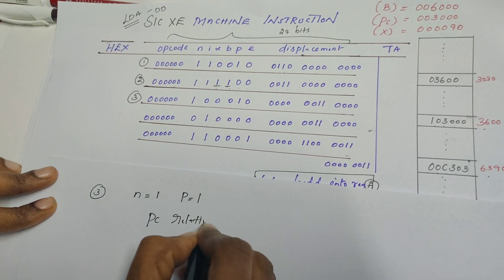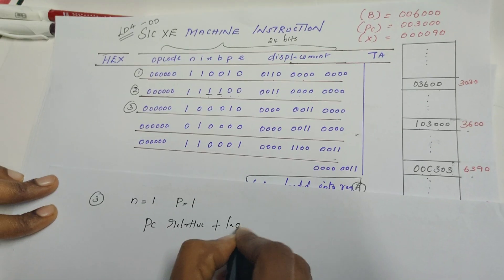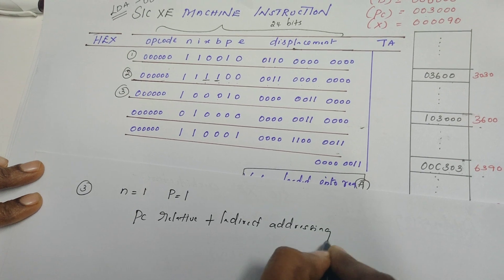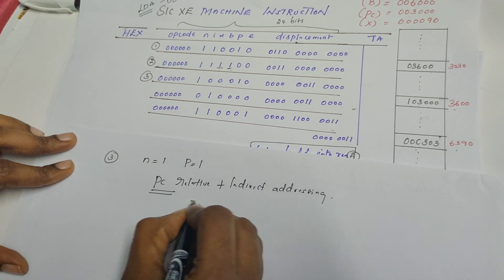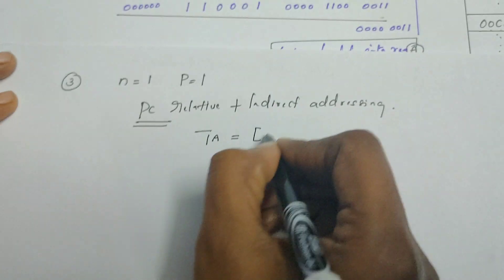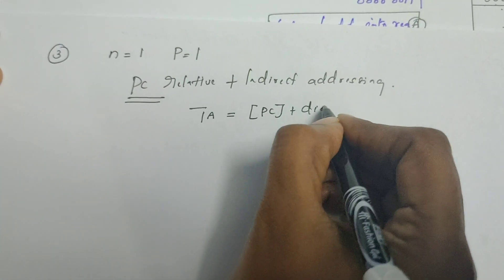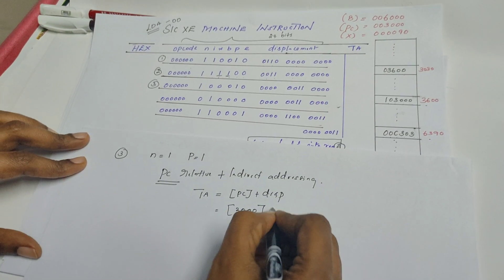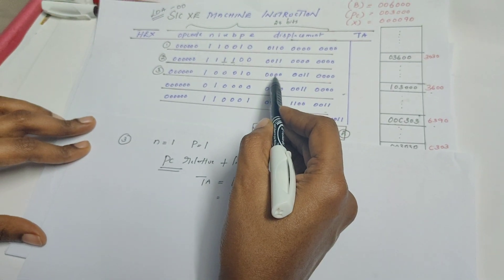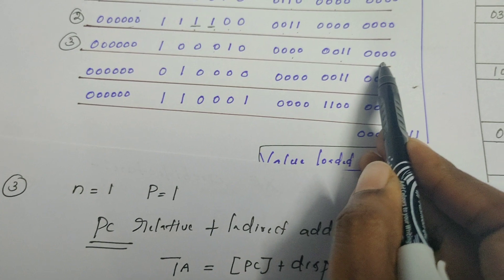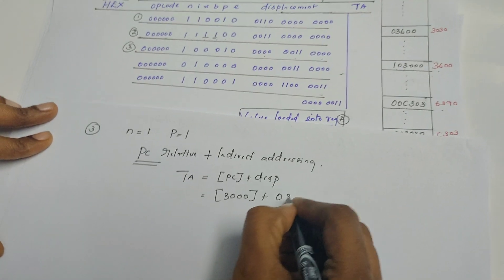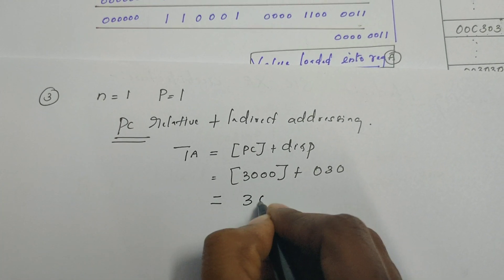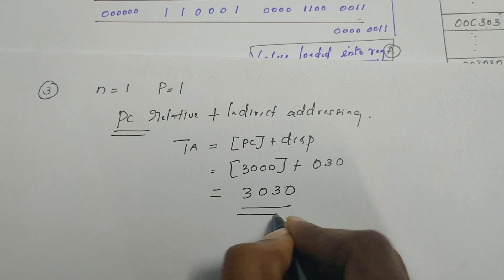For PC relative addressing, the target address is calculated by adding the contents of PC with the displacement field. The PC content is 0x003000 and the displacement field for this instruction is 0x030. Adding these gives an effective address of 0x3030.